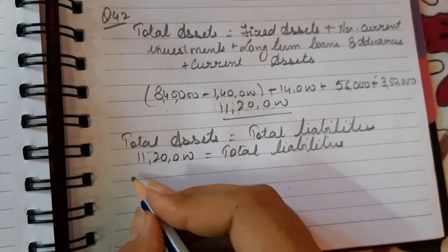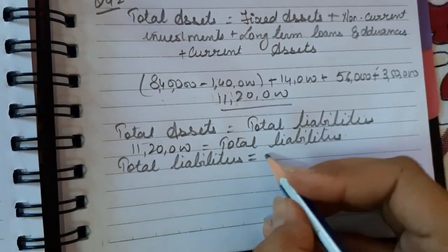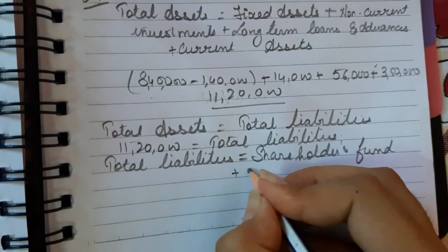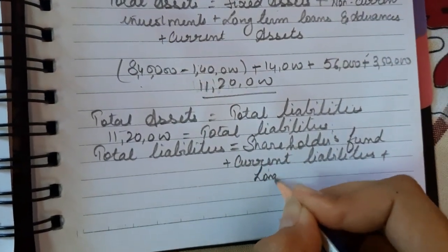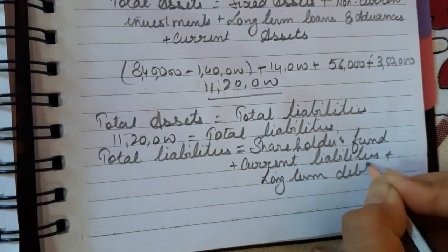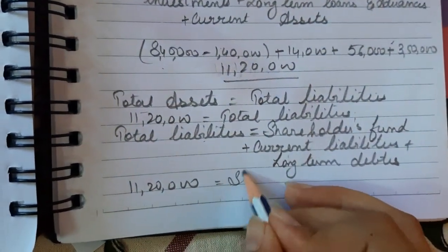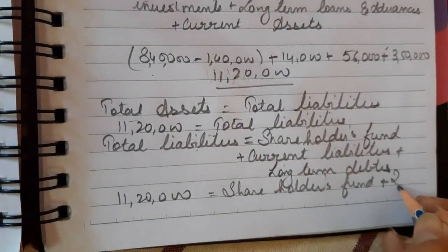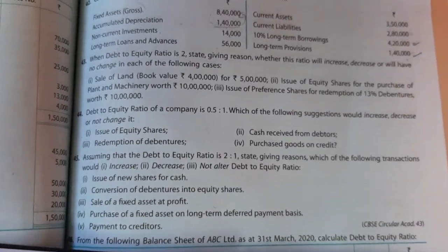Equity can be found from: total liabilities = shareholders fund + current liabilities + long-term debts. The two long-term debts are 4,20,000 + 1,40,000 = 5,60,000.